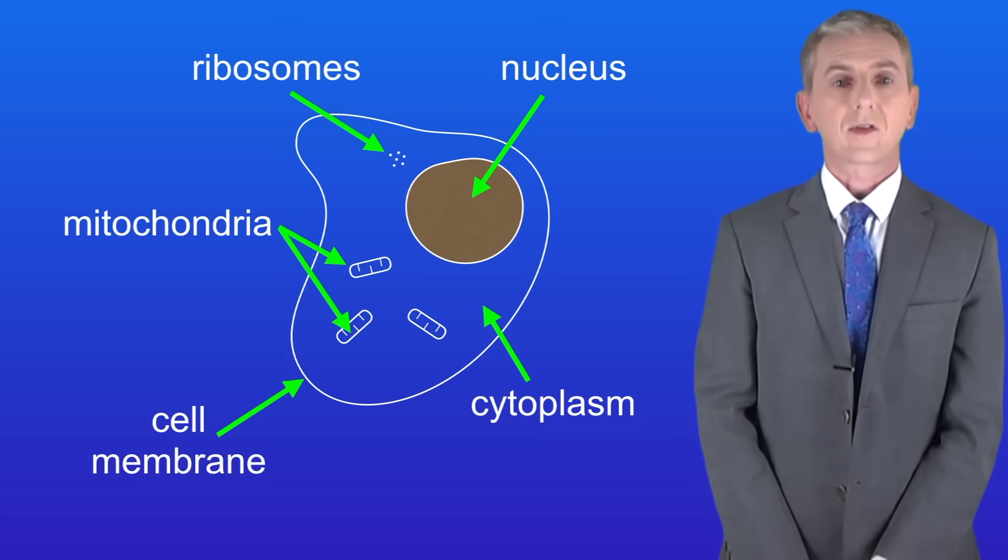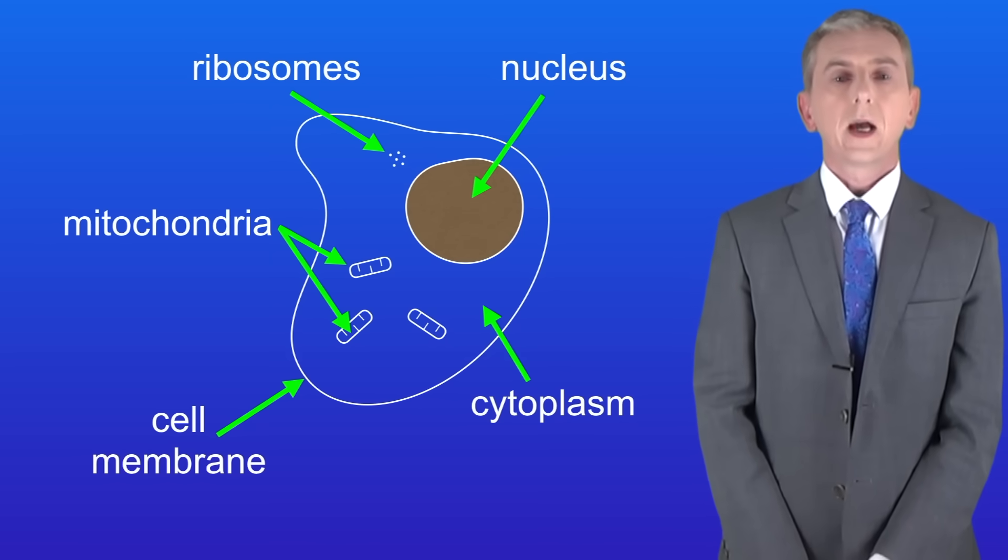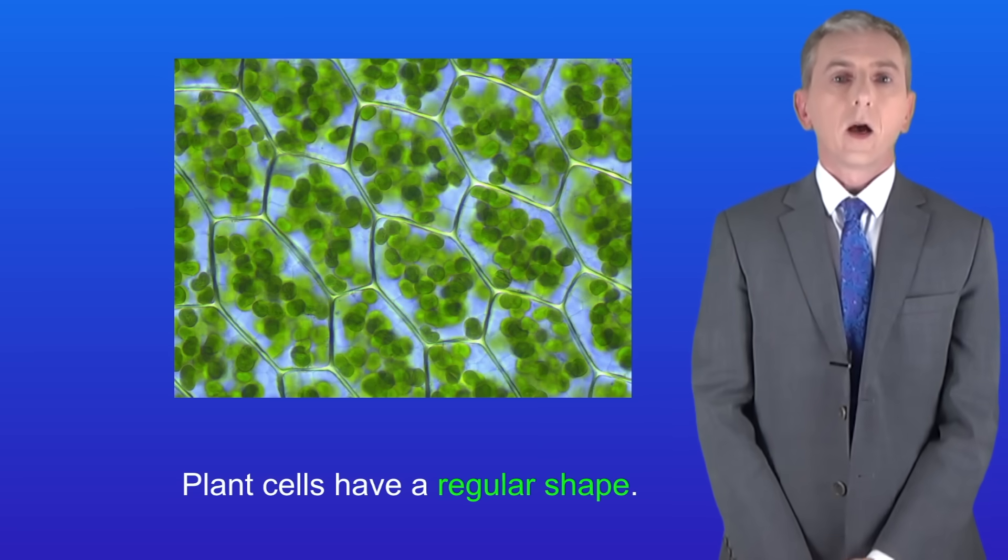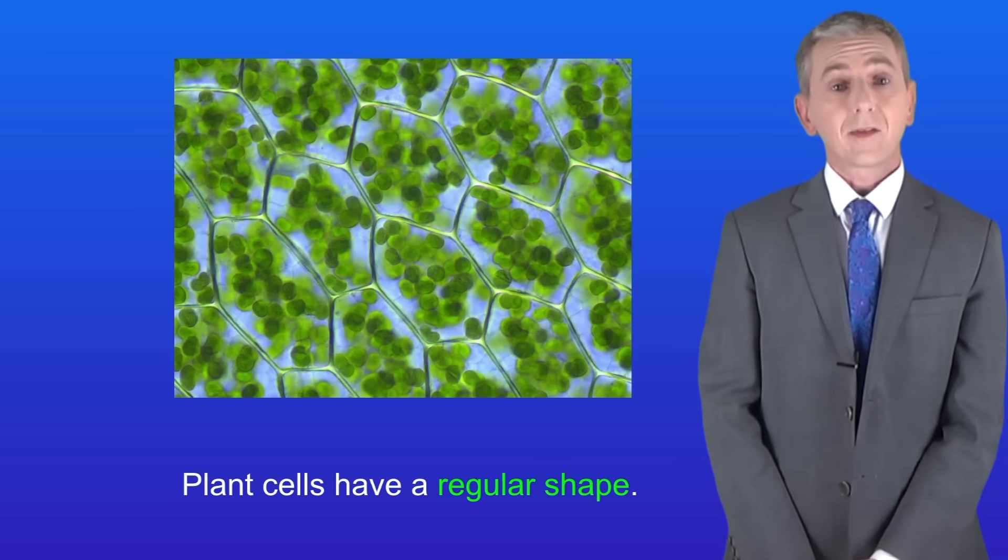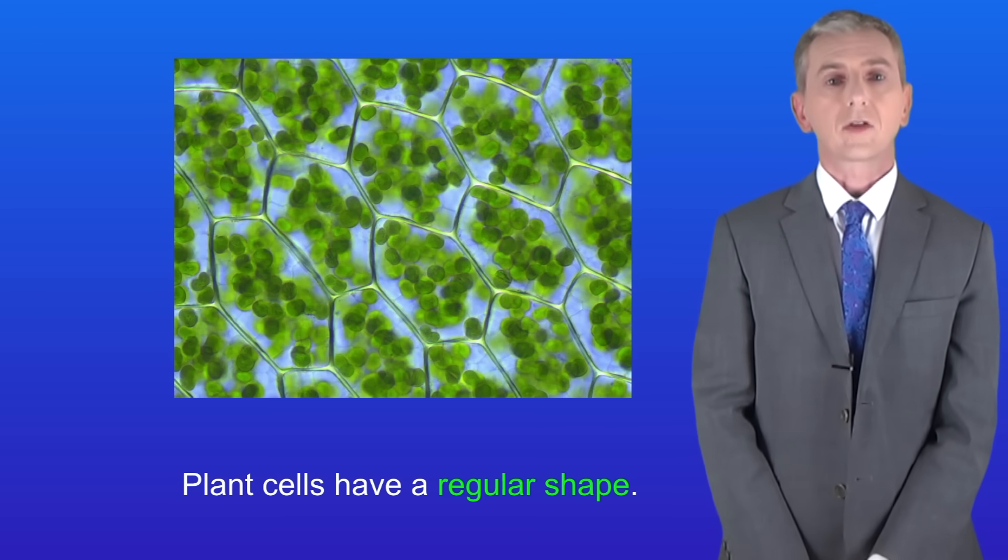Now in this video we're looking at plant cells. Remember that unlike animals, plants can use light to carry out photosynthesis. I'm showing you plant cells under a microscope here. The first thing to notice is that plant cells have a regular shape, unlike animal cells which can easily change their shape.